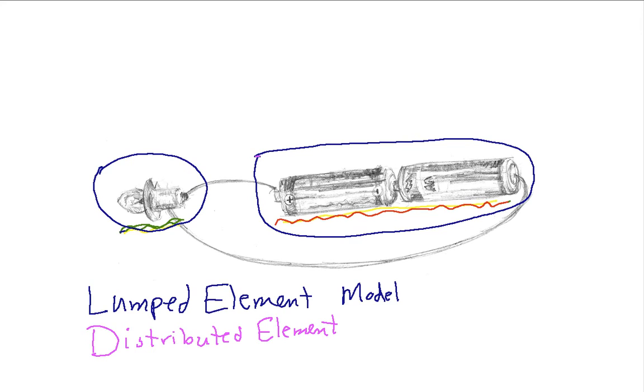For example, your cell phone has an antenna and that antenna radiates electrical or electromagnetic energy. In order to understand how that works, you need to understand the electric fields and the magnetic fields that are surrounding the antenna. You need to understand how the signals are propagating through the antenna and through wires connected to the antenna.